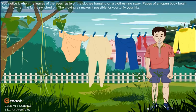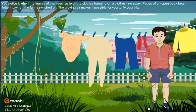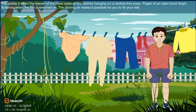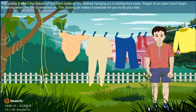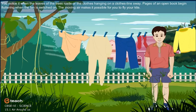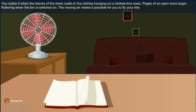You notice it when the leaves of the trees rustle or the clothes hanging on a clothesline sway. Pages of an open book begin fluttering when the fan is switched on. The moving air makes it possible for you to fly your kite.